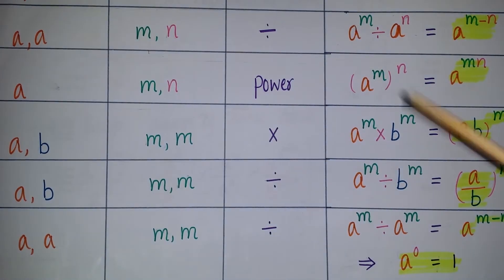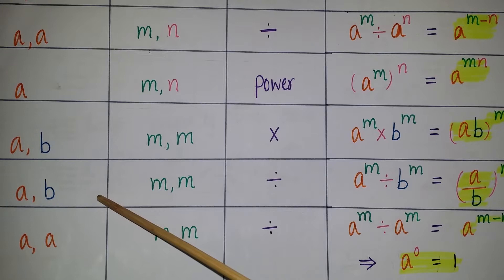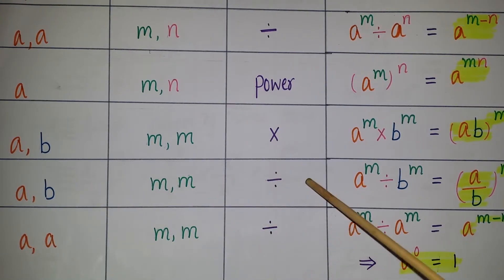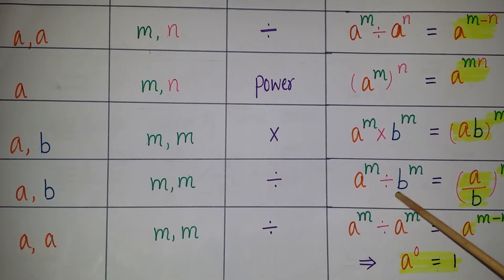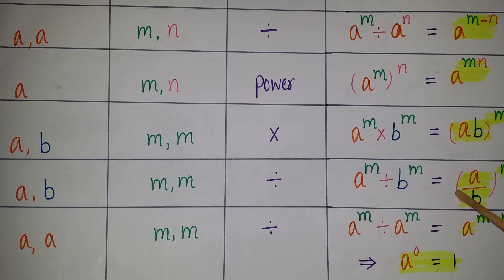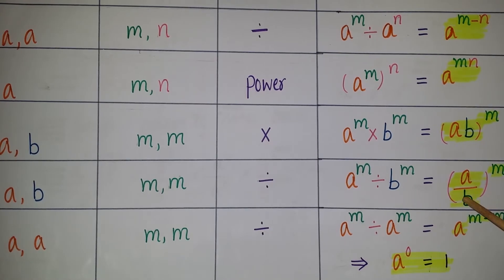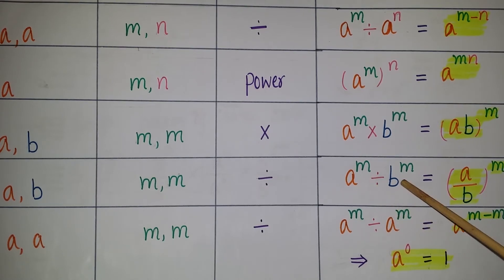The fifth law: if the bases are different (a, b) and the exponents are the same (m, m) and the arithmetic operation is division, then a to the power of m divided by b to the power of m is equal to (a/b) whole to the power of m. Here we first divide the bases and then apply the same exponent.